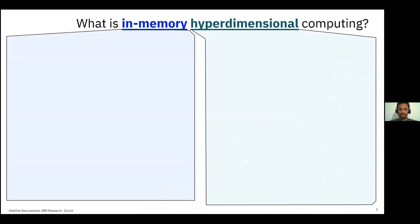I would like to give you an idea of what In-Memory Hyperdimensional Computing means. It is basically two broader domains put together. On one side, we have In-Memory Computing. On the other side, we have Hyperdimensional Computing. In-Memory Computing is somewhat a distant domain to the audience of today's talk, so I'll take a bit of time to explain the idea.